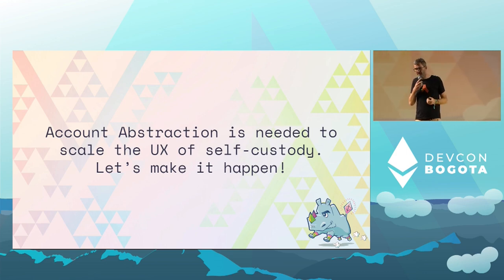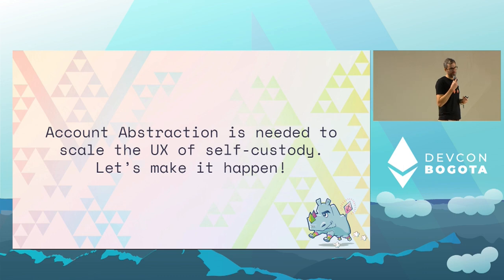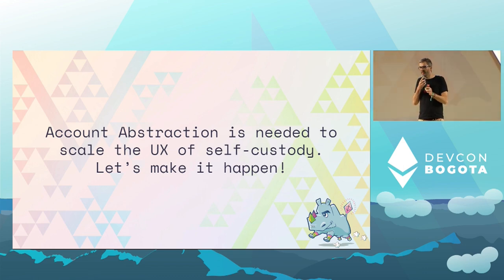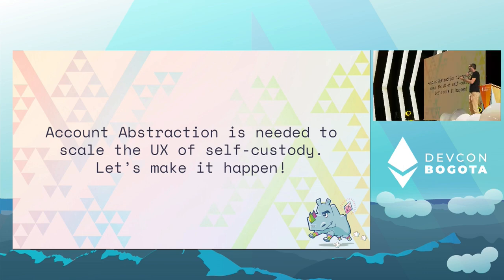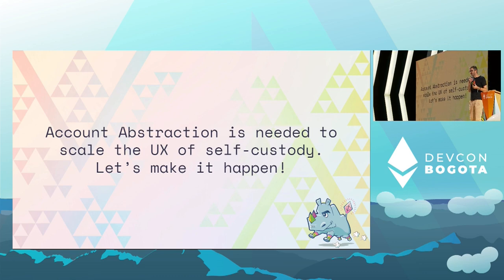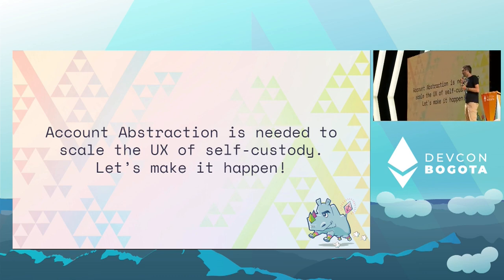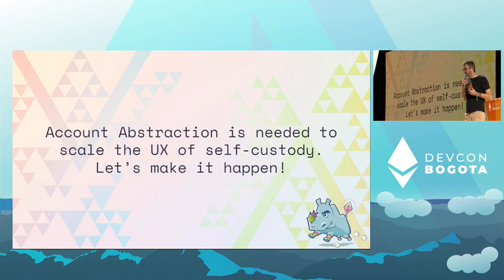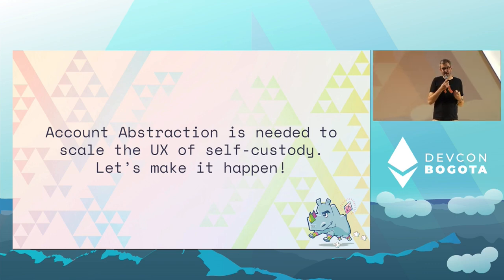The use cases I've shown are things we're building and exploring at Argent, but I believe account abstraction opens a completely new design space for user experience — we're only scratching the surface. I hope I've convinced you that account abstraction is needed for the UX of the blockchain and to really scale the user experience of self-custody. If we don't do this and stick to the EOA model, my bet is that the next wave of users will turn to centralized solutions. We need to build a user experience on par with centralized exchanges, baking self-custody into every interaction on the blockchain — and I'm convinced only account abstraction can do that.